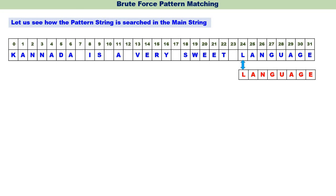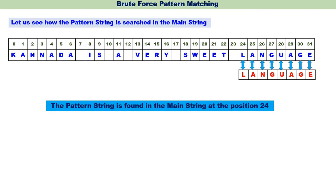Since L and L match, we compare the next characters: A and A are matching, N and N match, G and G match, U and U match, A and A match, G and G match, E and E match. Now the pattern string 'language' is found in the main string at position 24. We have found the pattern string in the main string at position 24.